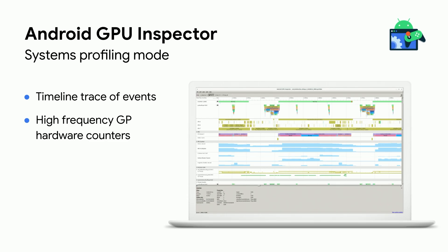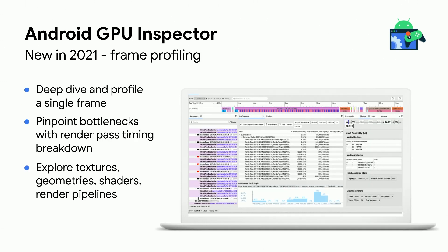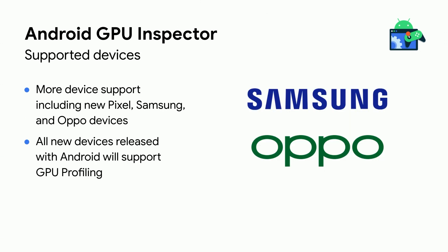Last year, we released the first beta of Android GPU Inspector — our tool to give you a trace of events from system activities and high-frequency hardware counters while your game is running, plotting all this on a timeline similar to our Systrace tool. We then added GPU memory support, OpenGL ES support through ANGLE, new supported devices, and the frame profiler, which allows you to deep dive into a single frame, providing timing information breakdowns at the render pass level. It also lets you explore textures, geometry, shaders, render pipelines, and more. We're working with OEMs such as Samsung and Oppo to add more supported devices, and all devices released with Android 12 will support AGI out of the box.